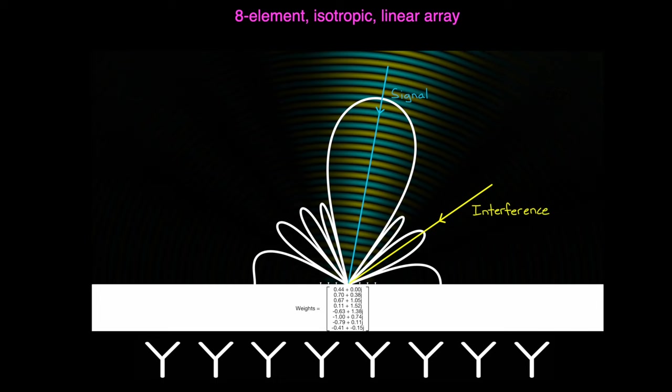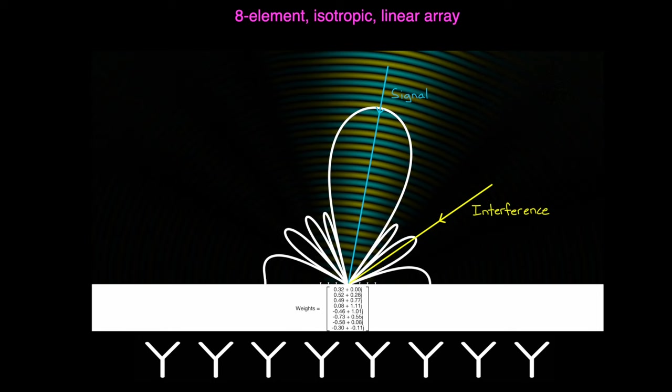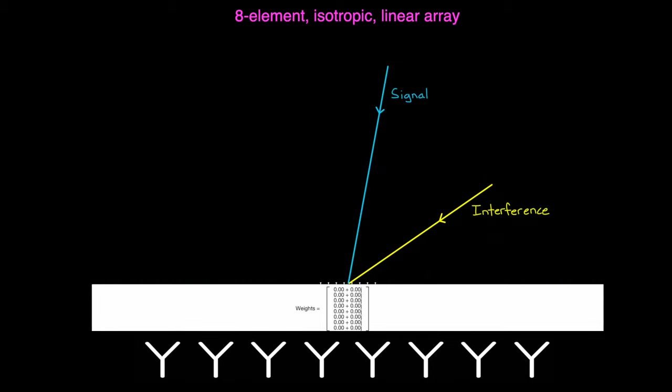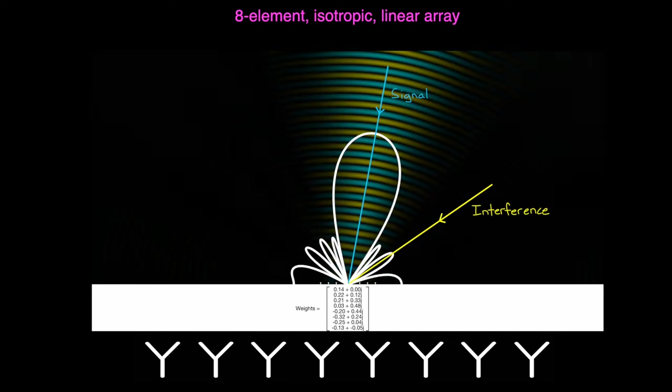And we know that we can manipulate the shape of the pattern even further by adjusting both gain and phase. So how can we adjust the weights to minimize this interference? Well if all we're trying to do is minimize the total power in the received data, then the optimal gains are just zeros across the board. I mean, if nothing is getting through, then there is no interference, and the problem is solved.